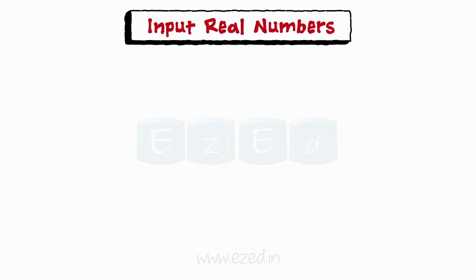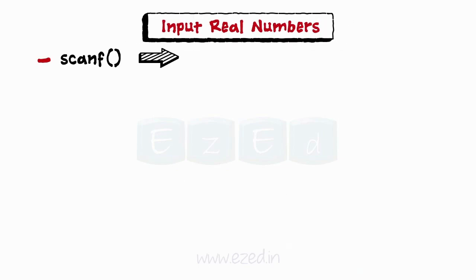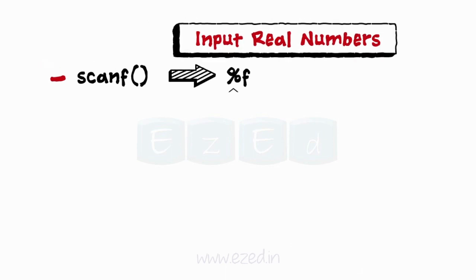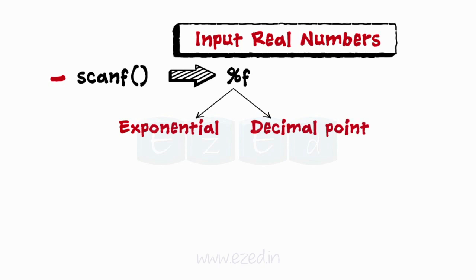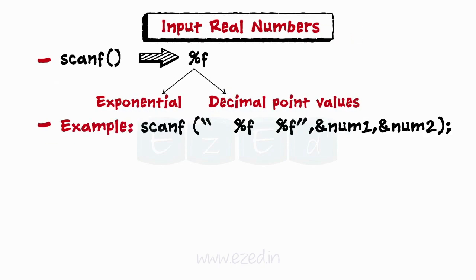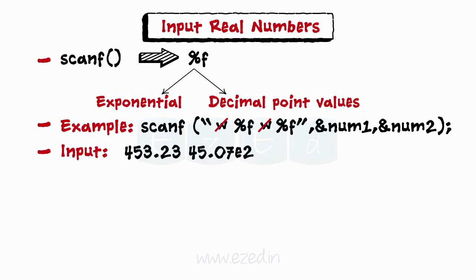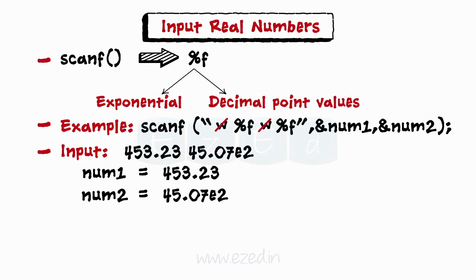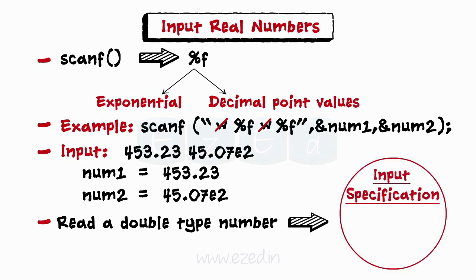Next we move on to learning inputting real numbers. scanf uses %f notation to read real numbers for both exponential as well as decimal point values. Unlike integer numbers, the field width of floating point numbers is not specified. Here if we input 453.23 and 45.07e2, then it will assign 453.23 to number1 and 45.07e2 to number2. If we want to read a double type number, then the input specification should be %lf. We can skip a number by writing %*f.